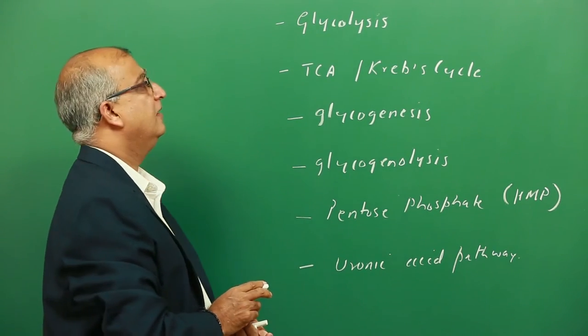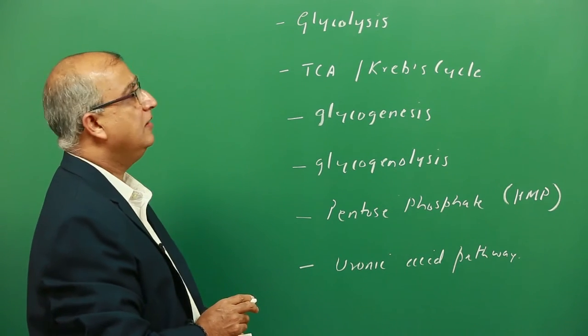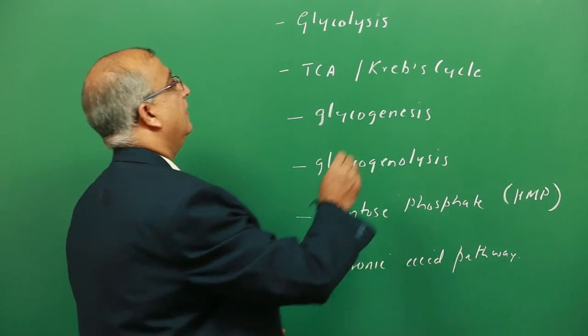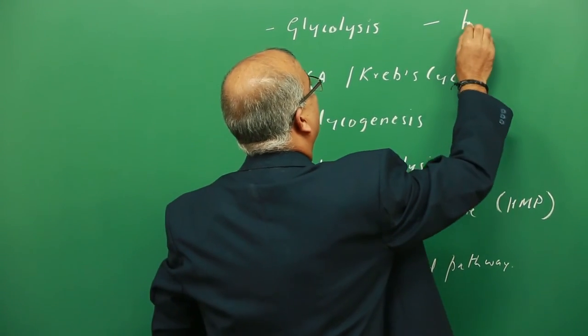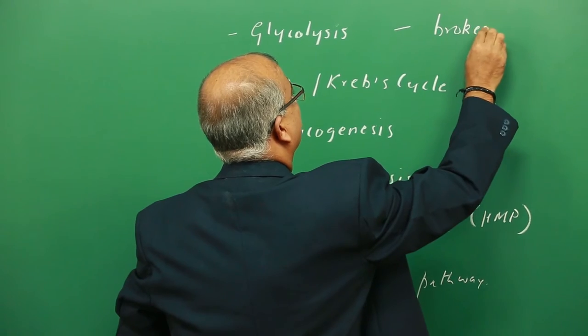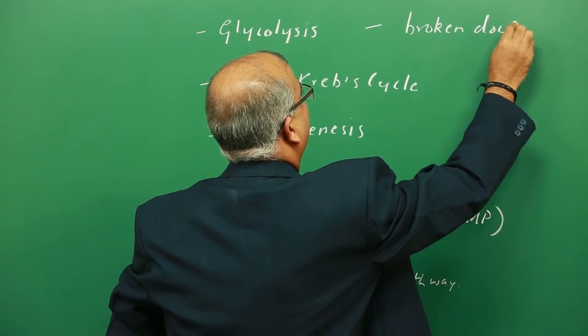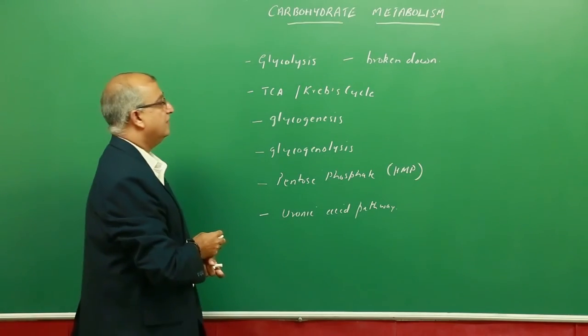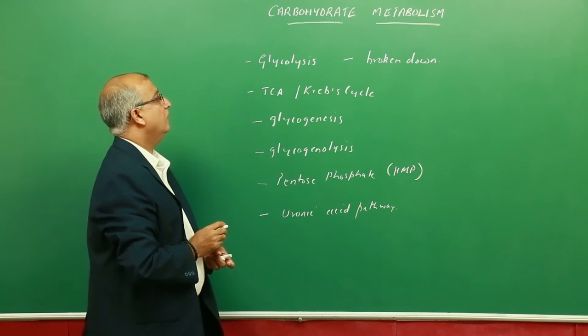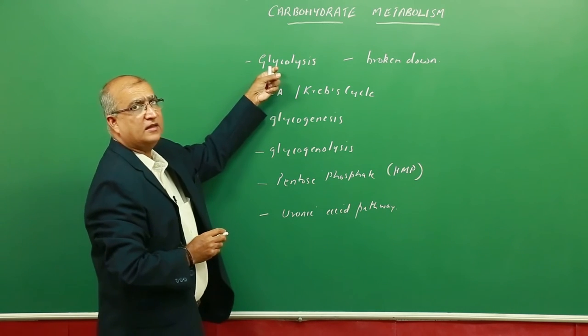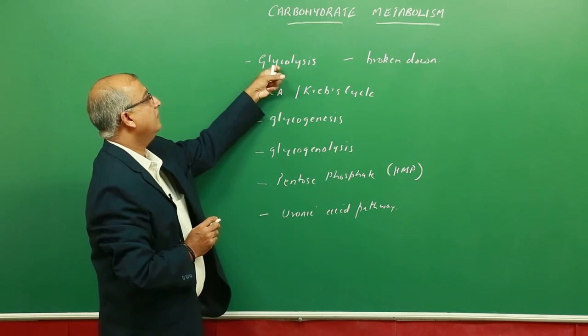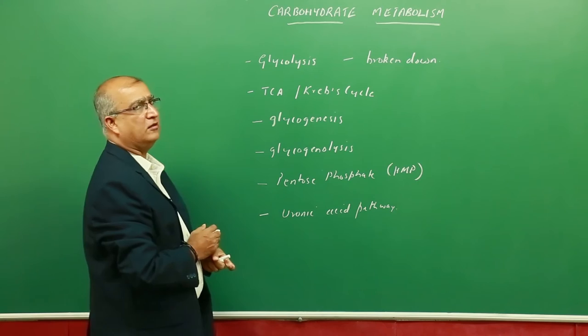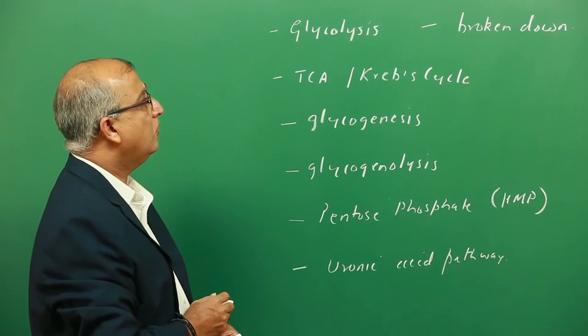Glycolysis, as the name suggests, is a pathway in which you will find that hexose or glucose is actually broken down with the intention of obtaining energy. So it is a catabolic pathway, and the fact that it is a breakdown pathway is indicated by the name glycolysis, or breakdown of sugars.